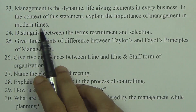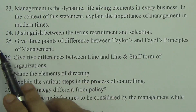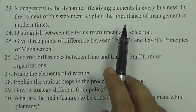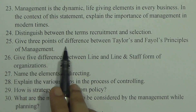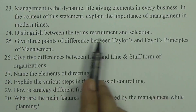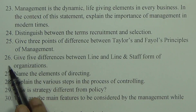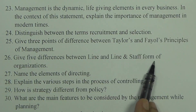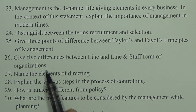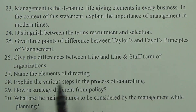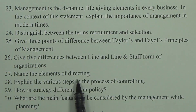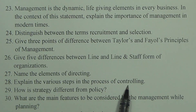Sometimes you don't get a direct question — you get a statement, and in the light of that statement you need to explain certain points. Question twenty-four: Distinguish between the terms recruitment and selection. Question twenty-five: Give three points of difference between Taylor's and Fayol's principles of management. Question twenty-six: Give five differences between line organization and line and staff form of organization. Question twenty-seven: Name the elements of directing. Question twenty-eight: Explain the various steps in the process of controlling.